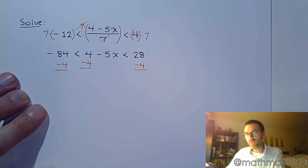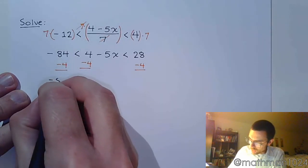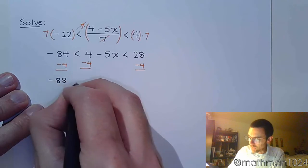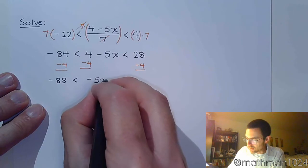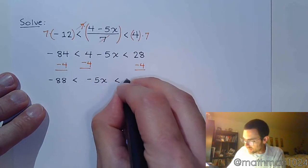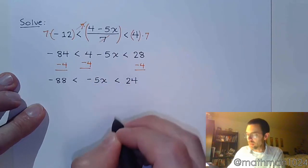Now, notice that subtracting 4 is not division. So, my inequality symbol is not going to change. Negative 88 is less than negative 5x, which is less than 24.